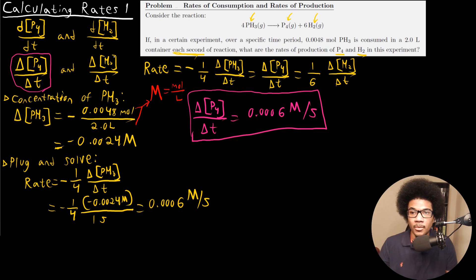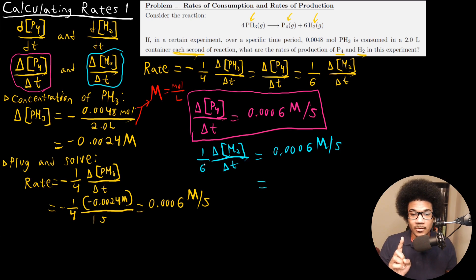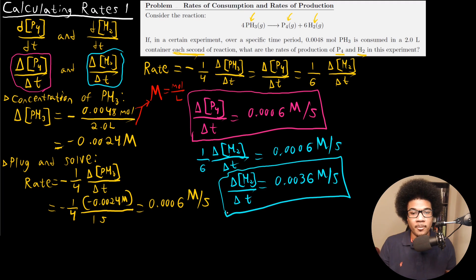Now we need to solve for the rate of production of H2. This one actually has a stoichiometric coefficient, so it takes a little more work. We have one-sixth times delta H2 over delta T equals 0.0006 molar per second. All I have to do is multiply by six on both sides, and that gives me my final answer: delta H2 over delta T equals 0.0036 molar per second. So that gives you the rate of production for H2.